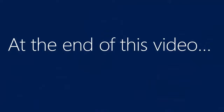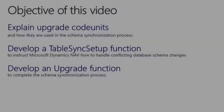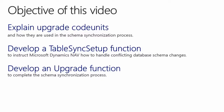At the end of this video, we'll have an upgrade code unit that automates the schema synchronization process to handle conflicting schema changes. The objective is to explain upgrade code units and how they are used in the schema synchronization process, then to develop a table sync setup function to instruct NAV how to handle conflicting database schema changes, and finally to develop an upgrade function to complete the schema synchronization process.